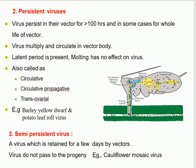Third type is the semi-persistent virus. A virus which is retained for a few days by the vector, and the virus does not pass to the progeny. Example: cauliflower mosaic virus.